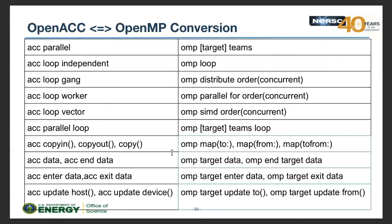Here's a conversion table — it's almost one-to-one. Converting from OpenACC to OpenMP is not hard. The main question is which compiler implementation gives good performance for your code. Gang/worker/vector maps to distribute/parallel for/SIMD, and the data clauses have direct equivalents.